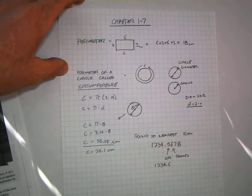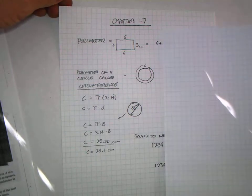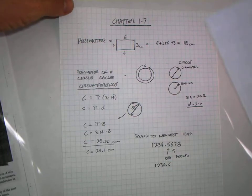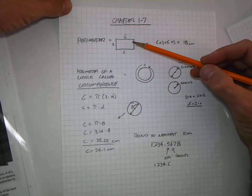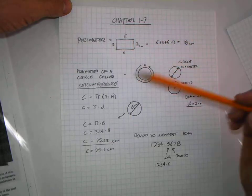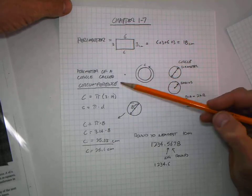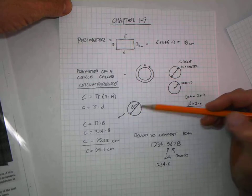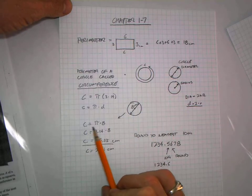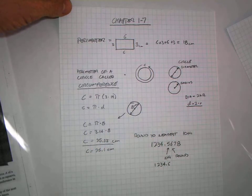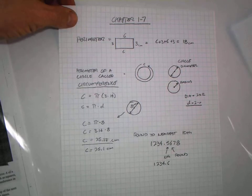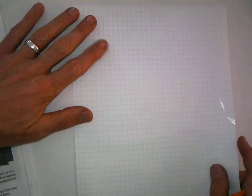In the last section, we did Chapter 1-7 on perimeter—perimeter of a square, meaning you added up all the sides, or the perimeter of a circle, which is called circumference, using the formula C equals pi times diameter. For the next section, we will be moving on to area.